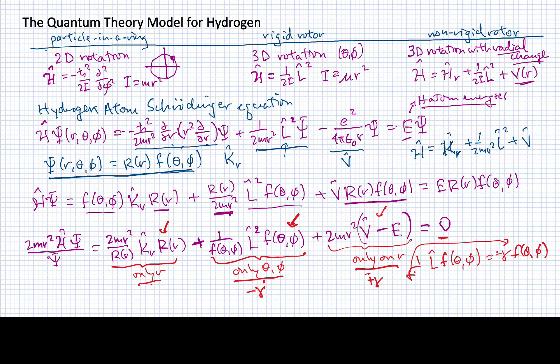What I'll find is that the value of my gamma here must equal the eigenvalues of the angular momentum squared operator. This is just an eigenvalue equation for L squared.